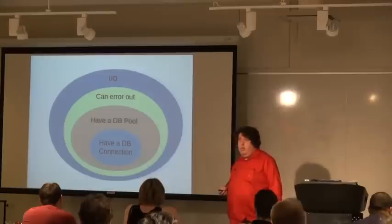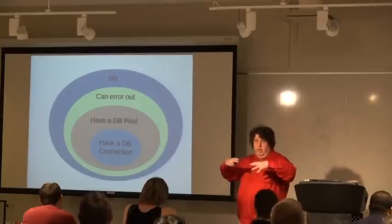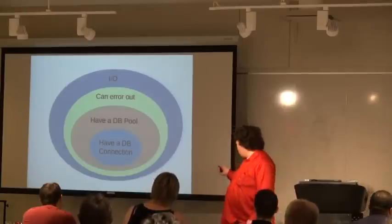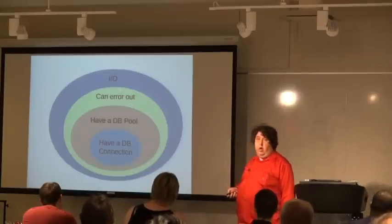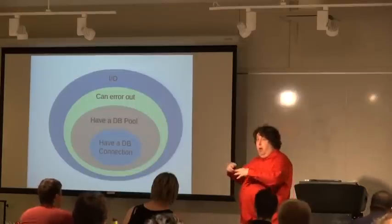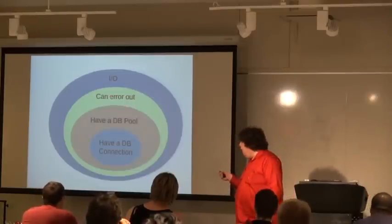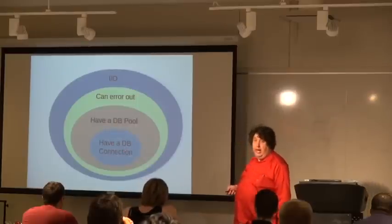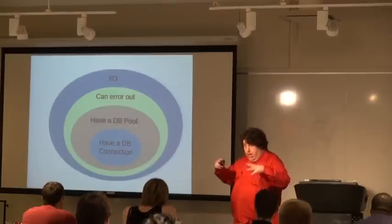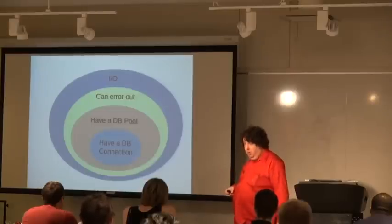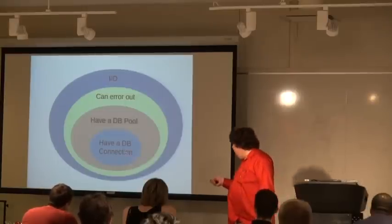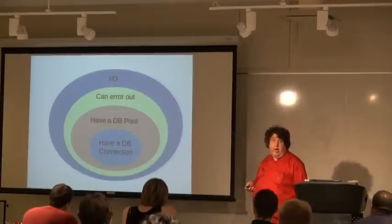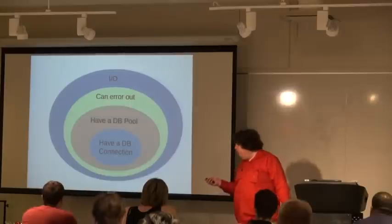These sort of form concentric subdomains. The domain where you can error out is a proper subset of the domain where you can do IO. Likewise, where you have a DB pool and a DB connection are inner, more specific domains. If I'm in the DB connection domain, I have a DB pool, I can error out, and I can do IO — I can do all of these at the same time.